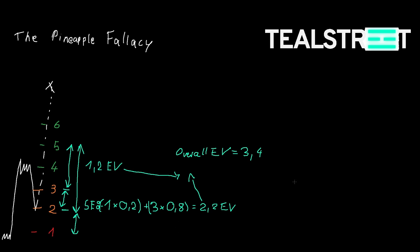Now we need to know the EV per contract, because we want to see how efficient every position is and compare single positions with average entries of the same size. You can't compare apples with bananas — so if we want to compare EVs we have to compare the same size. We divide 3.4 by two, which gives 1.7 EV per contract. We can already see that adding a position here is way more efficient than just having one position with a wider stop. The difference in EV is 0.5 per contract.